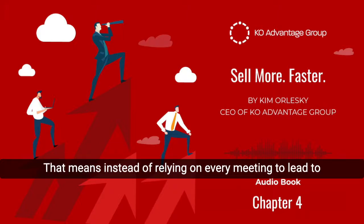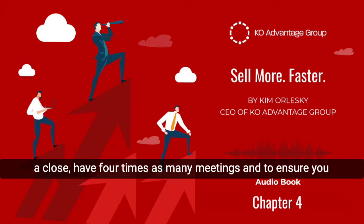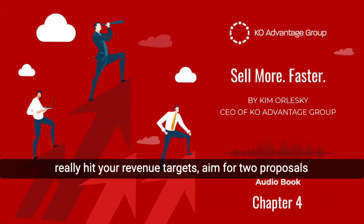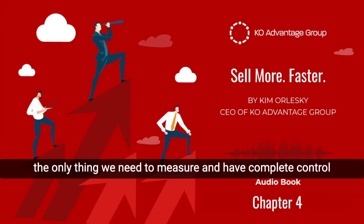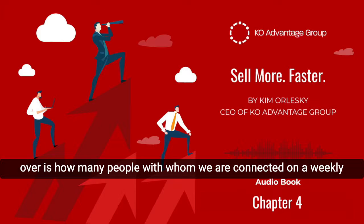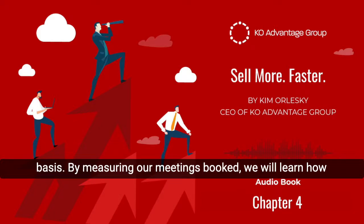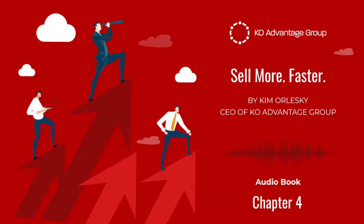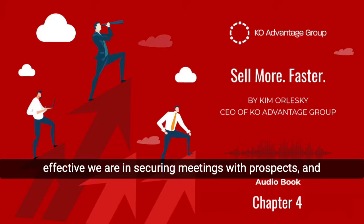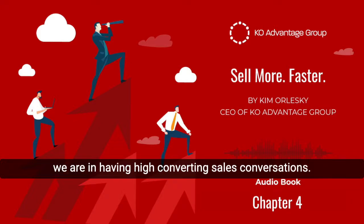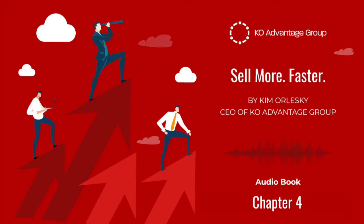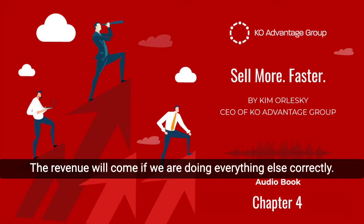That means instead of relying on every meeting to lead to a close, have four times as many meetings. And to ensure you really hit your revenue targets, aim for two proposals for every one you need closed. Because revenue is a lagging indicator of the work done, the only thing we need to measure and have complete control over is how many people with whom we are connected on a weekly basis. By measuring our meetings booked, we will learn how effective we are in securing meetings with prospects. And measuring the number of proposals will show us how effective we are in having high converting sales conversations. The revenue will come if we are doing everything else correctly.